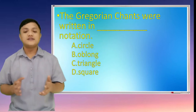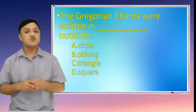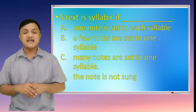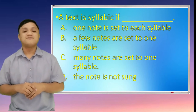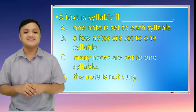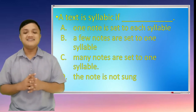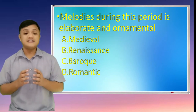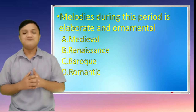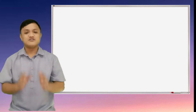Number 3. Gregorian chants were written in blank notation. Is it A. Circle, B. Oblong, C. Triangle, or D. Square? Number 4. A text is syllabic if blank. A. One note is set to each syllable, B. A few notes are set to one syllable, C. Many notes are set to one syllable, and D. The note is not sung. Number 5. Melodies during this period are elaborate and ornamental. A. Medieval, B. Renaissance, C. Baroque, and D. Romantic. Good job!